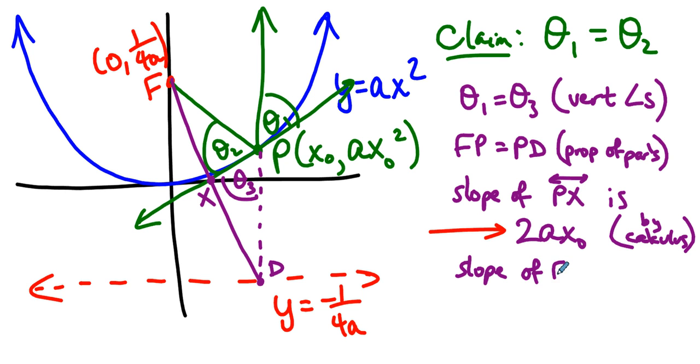Well, we can also figure out the slope of FD. And the slope of FD is changing Y over changing X, right? This has X coordinate X naught and Y coordinate negative 1 over 4A. And so Y2 minus Y1, that's negative 2 over 4A. X2 minus X1, that's X naught.